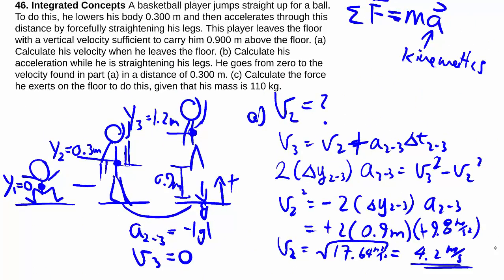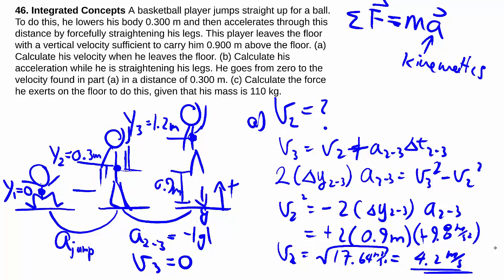For part b, they want the acceleration while he's straightening his leg, so in here. So let's call that a_jump. And we don't know that bit because he is touching the floor. He could be pushing really hard on the floor and then therefore the floor pushes really hard on him, which we'll find out in part c. But he's not in the air, so we don't know his acceleration. It's not negative g. But now knowing v2 and we know v1 is 0 because that's before he starts moving, we can use the same kinematics equation to find out what my acceleration is.